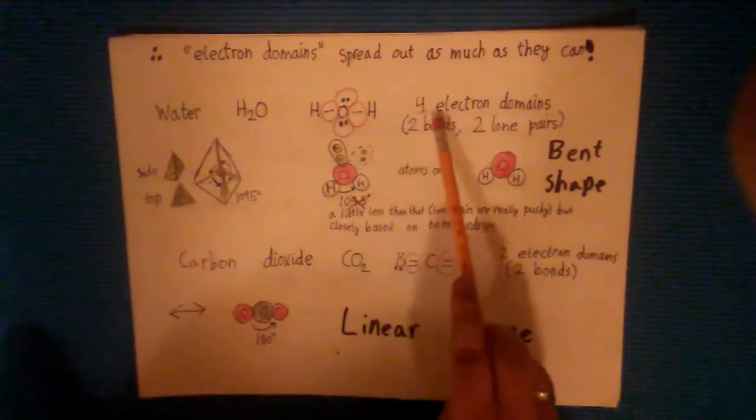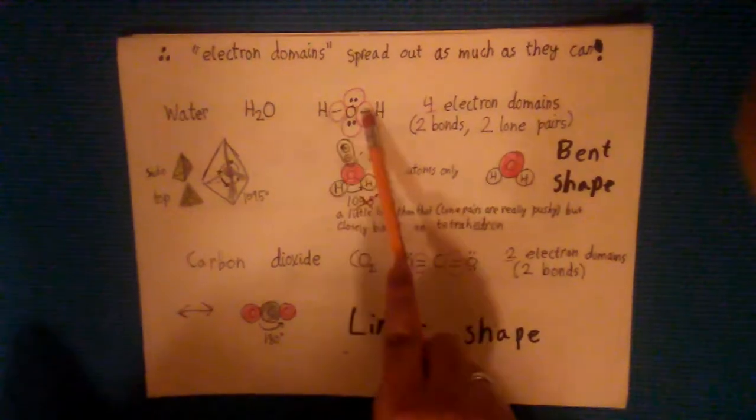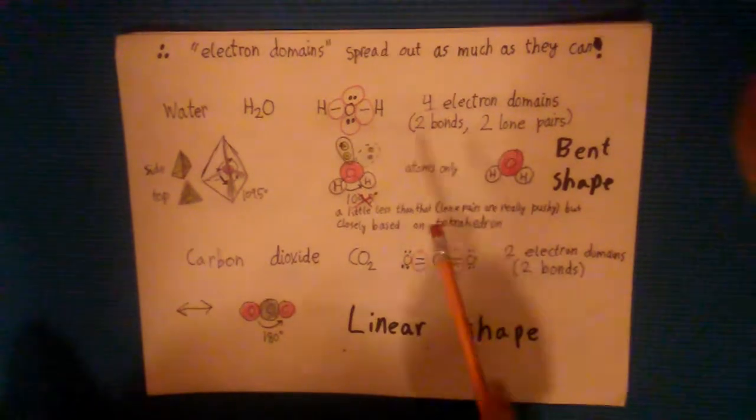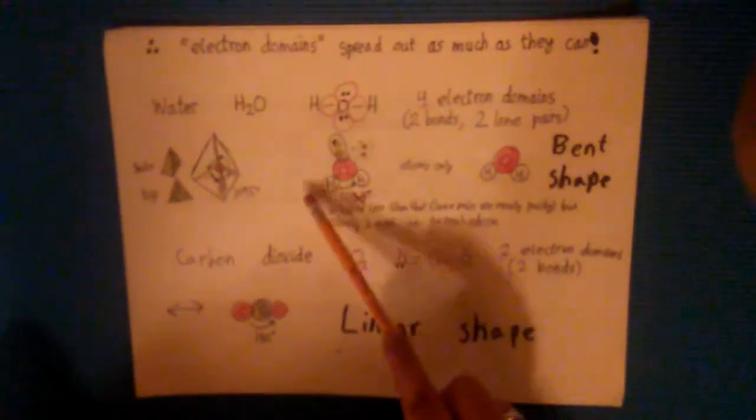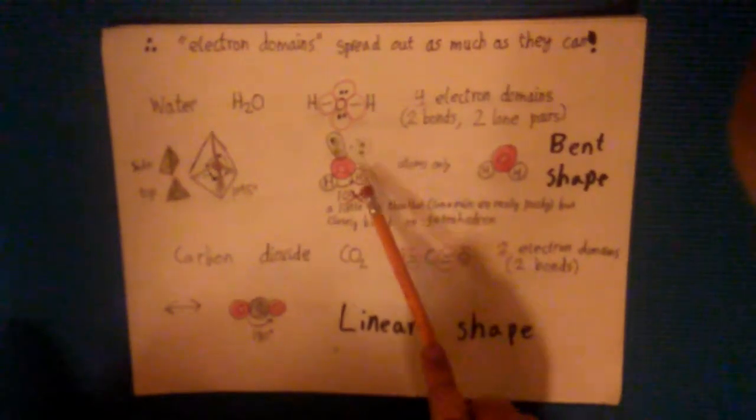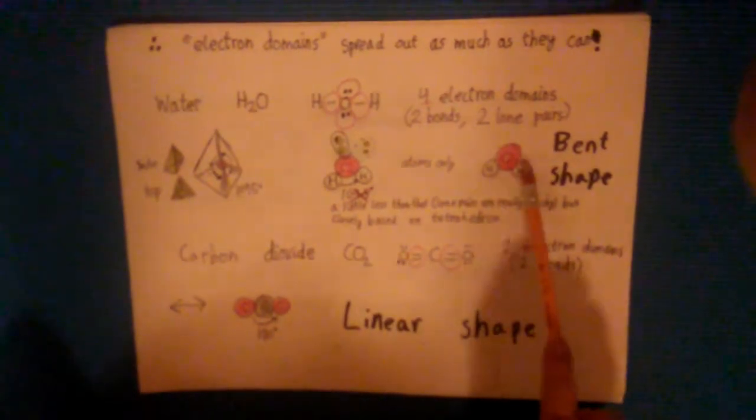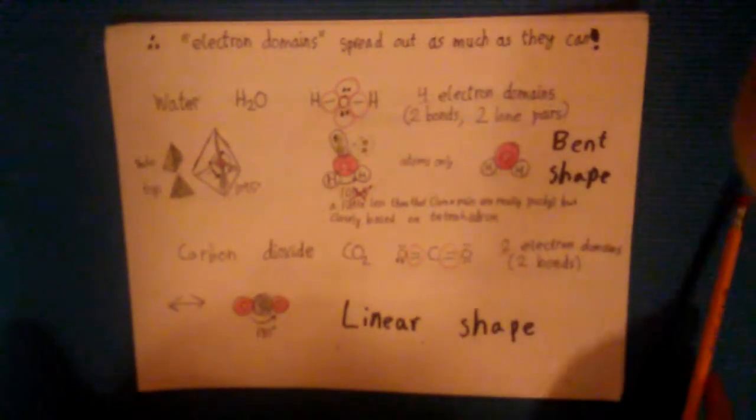For water you have four electron domains, the two bonds and the two lone pairs around the oxygen, so the most they can spread out is to make a tetrahedral shape. When you just look at the atoms without the lone pairs you get the bent shape that we're used to.